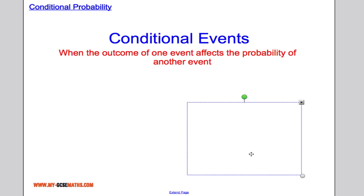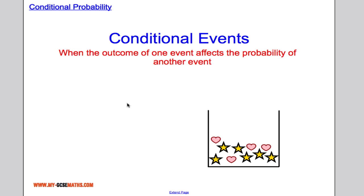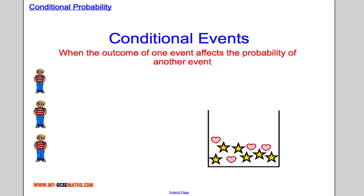Suppose we have a game show where the contestant randomly chooses something out of a drum. If they pick a heart they win a prize; if they pick a star they don't win a prize. We have three contestants, and contestant one chooses first. The probability that he wins is four hearts out of ten total objects — so four out of ten.